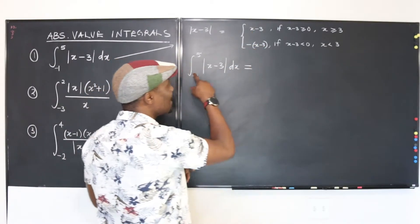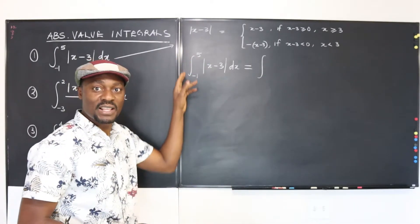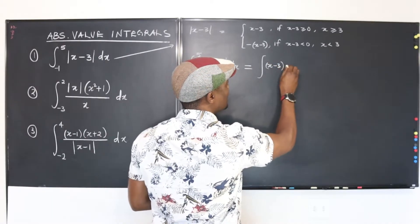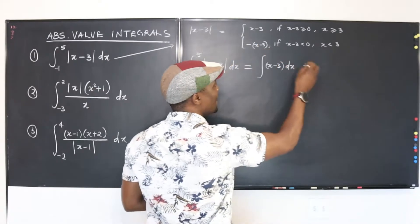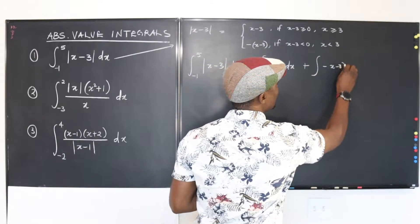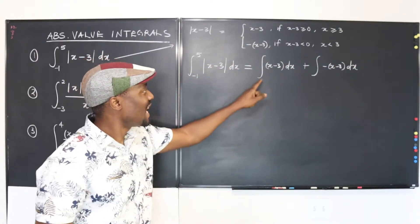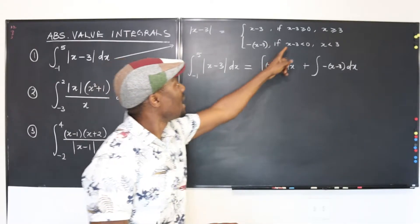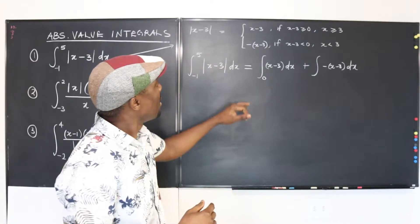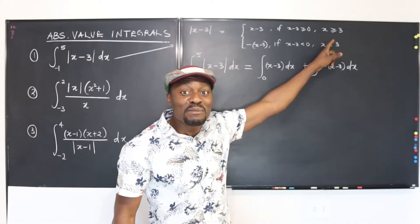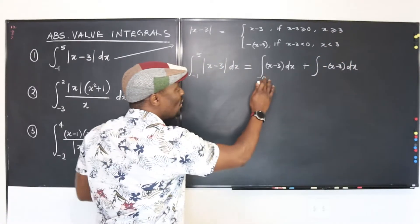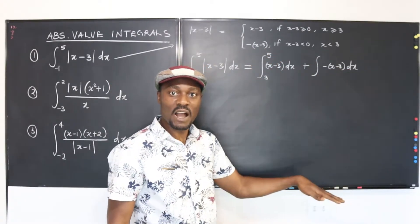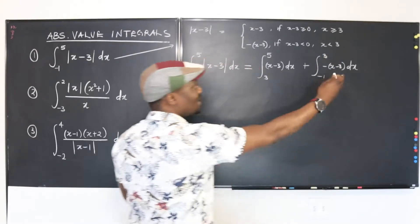So those are the two integrals we need to take. We're going to have two portions. One is the integral of (x minus 3) dx, and the other part will be the integral of negative (x minus 3) dx. Now let's put the boundaries. This part starts where x is greater than or equal to 3 — so the lower bound here is 3, not zero. I almost made that mistake. The upper bound is 5. The other piece is activated when x is less than 3, going from negative 1 to 3.